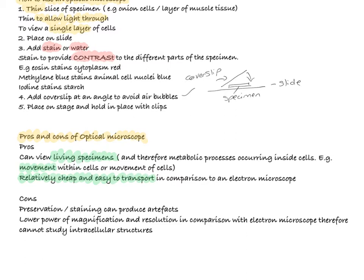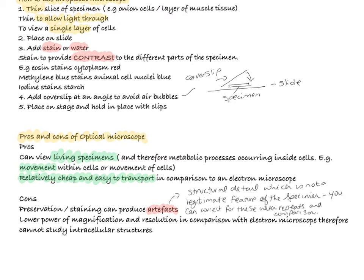Some problems with the light microscope are first of all, the actual act of the preservation or staining of the specimen. These can produce something called artifacts. Artifacts are things that you see under the microscope that aren't really there, or when a specimen has somehow been disrupted or changed in shape or structure. So that what you're looking at under the microscope is not really what would be there in the actual tissue. In addition, optical microscopes have lower powers of magnification and resolution in comparison with electron microscopes. And therefore, you cannot study intracellular structures.